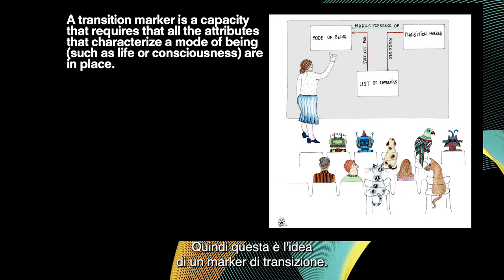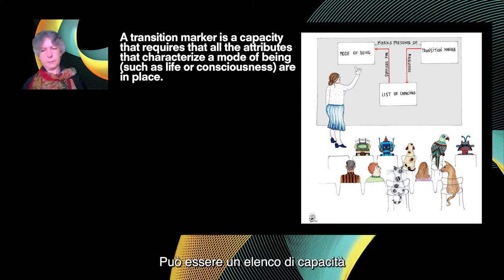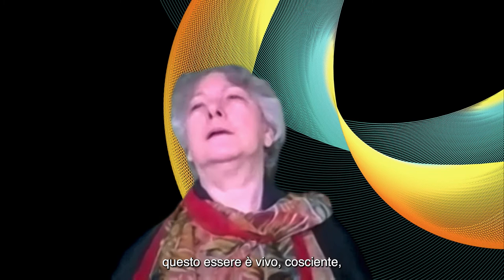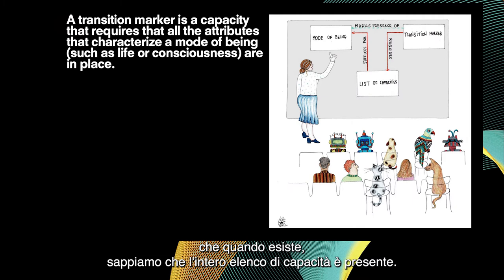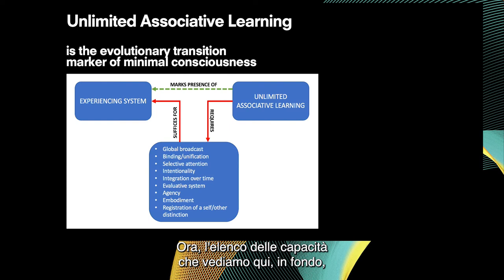Here is the idea of a transition marker. What Ganti did for the question of the origin of life was to find a list of capacities that everyone would agree, if displayed by some kind of being, are markers of life. It can also be a list of capacities characteristic of consciousness — something sufficient for us to say, yes, if somebody has this list of capacities, this being is alive, conscious, or, if we're thinking about rationality, rational. The next stage is to find a single tractable capacity that, when it exists, we know the whole list is in place. This is the kind of methodology that we applied.